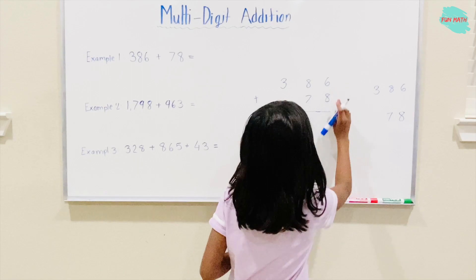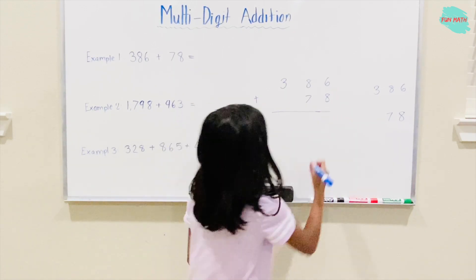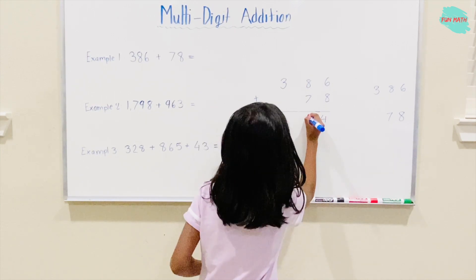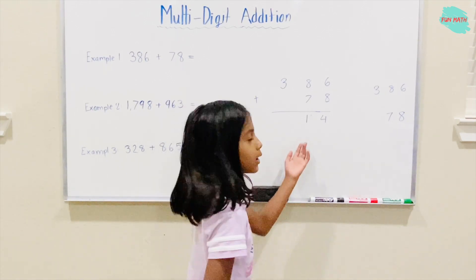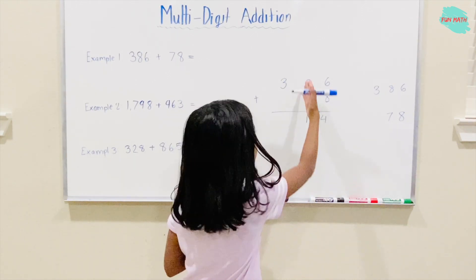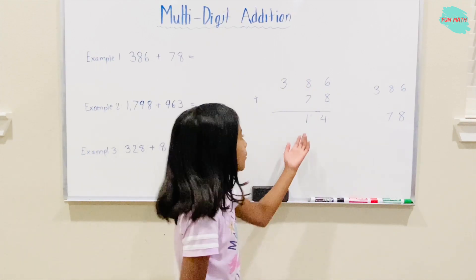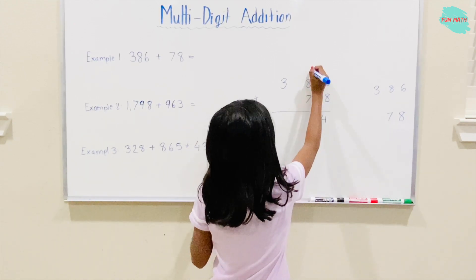What's 6 plus 8? 6 plus 8 is 14. But it's a two-digit number. You can't put 14 there or else you can't add these two numbers together. So you have to carry the 1 on top of the 8.